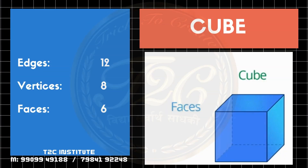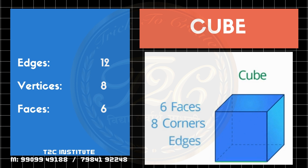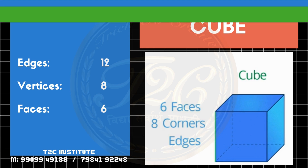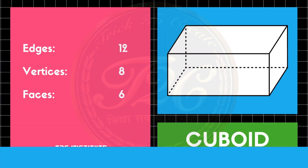Whereas in cube, we can clearly see in the video, it is having six faces. If you observe carefully, the corners — the vertices are eight, edges are 12. It is showing by the shining green line.